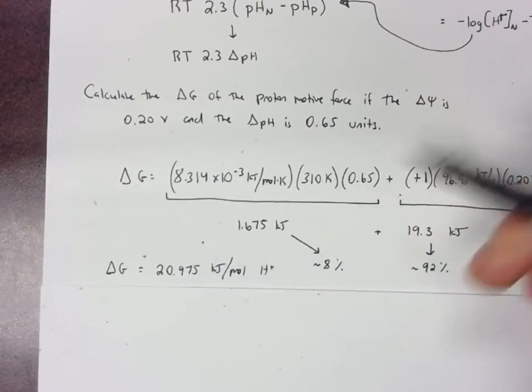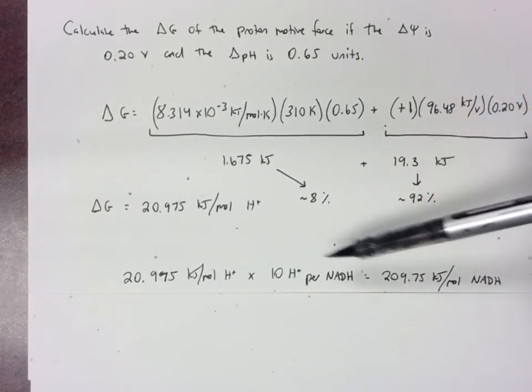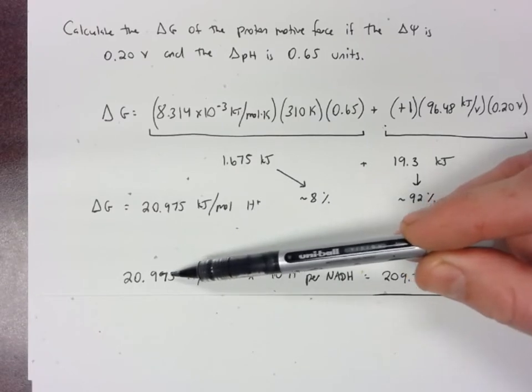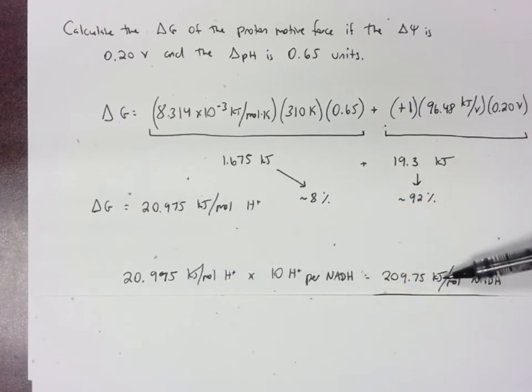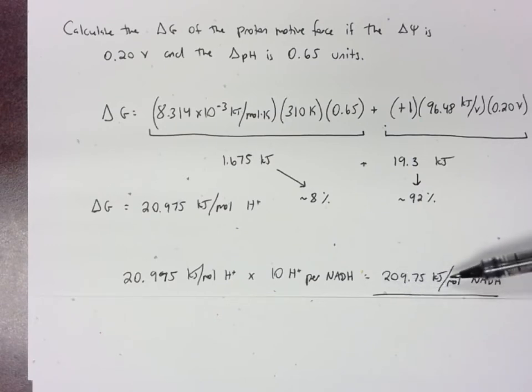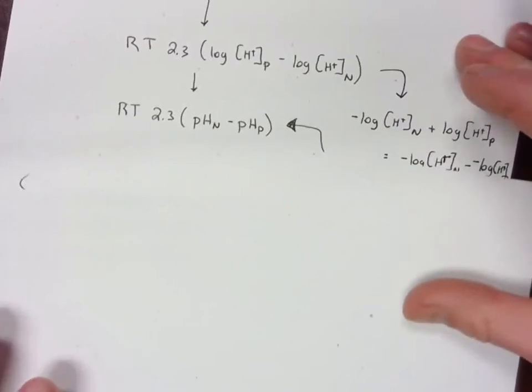Now because there are 10 protons pumped across per NADH, I can multiply this number by 10 to get the amount of energy out of transporting the electrons from NADH all the way to oxygen. And so it comes out to 209.75 kilojoules per mole. This is how much is stored on the inner membrane space side of the mitochondrial membrane, and then this energy is released once these protons flow back through ATP synthase. So I hope that was helpful and we'll see you next time.